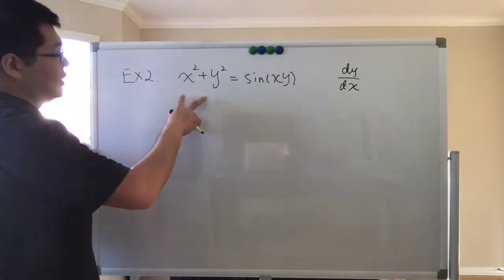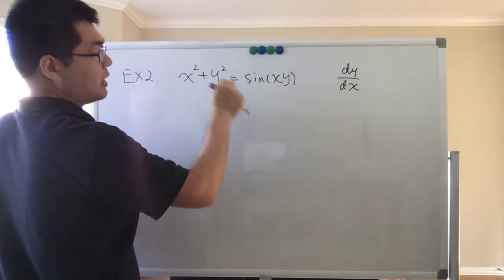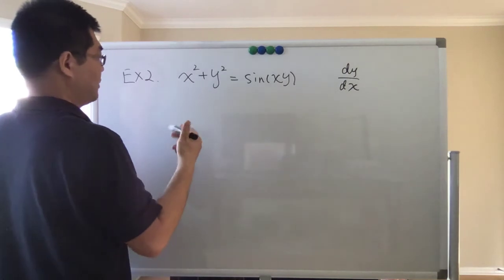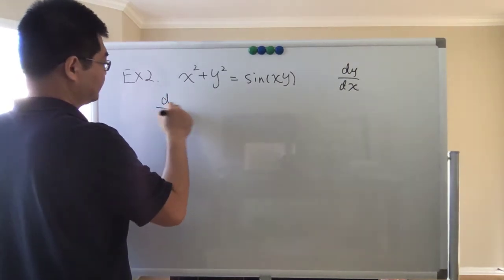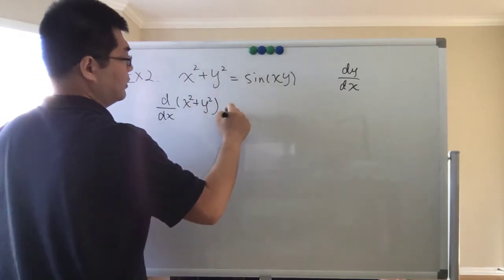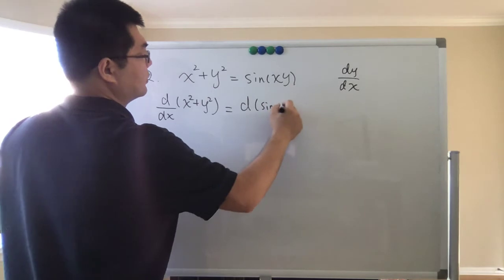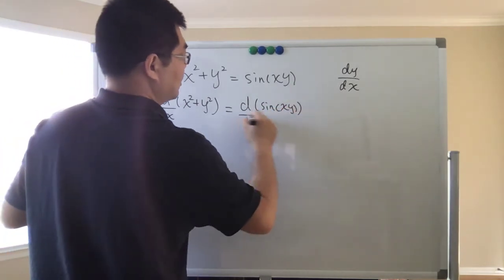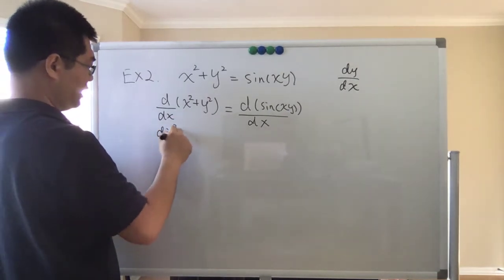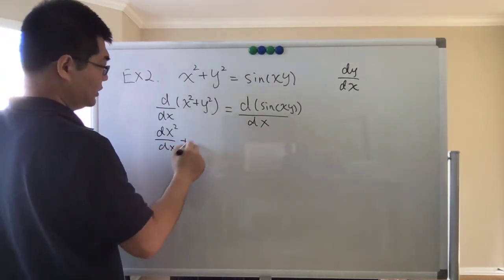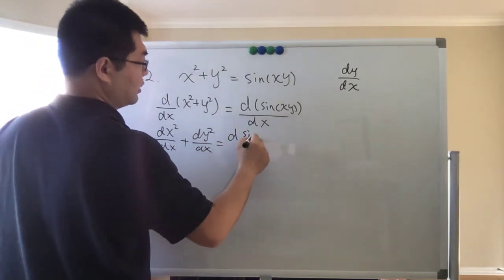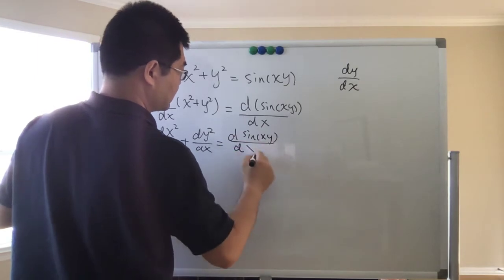Again, take the derivative with respect to x on both sides, and treat y as a function of x — that's what we do in the first step. So d/dx of x squared plus y squared equals d/dx of sine of xy. And then we distribute: d/dx of x squared, plus d/dx of y squared, equals d/dx of sine of xy.